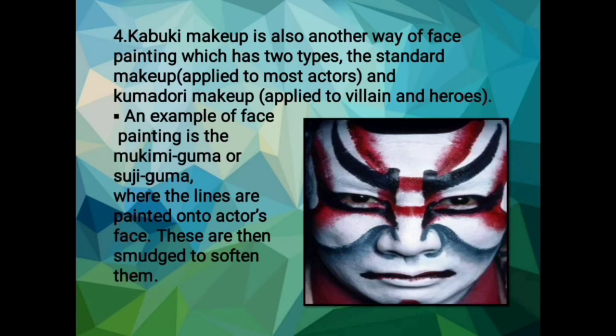Kabuki makeup, or Kesho, is in itself an interpretation of the actor's own role through the medium of facial features. On stage, this interpretation becomes a temporalization of makeup in collaboration with the audience. Kabuki makeup has two types: the standard makeup applied to most actors, and Kumadori makeup usually applied to villains and heroes. An example of face painting is Mukimi Guma or Suji Guma, where lines are painted onto the actor's face and then smudged to soften them.